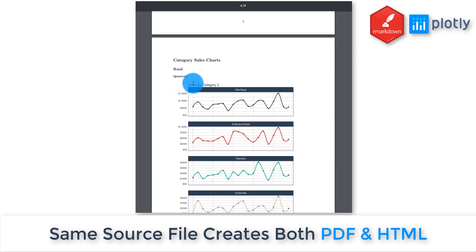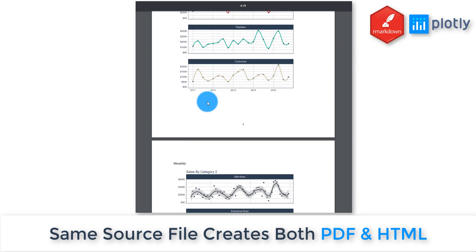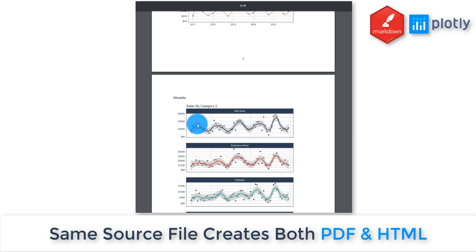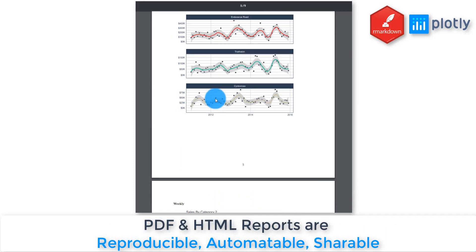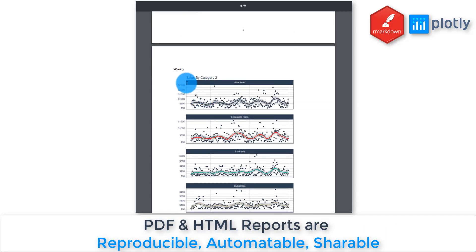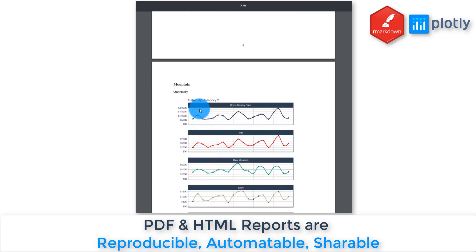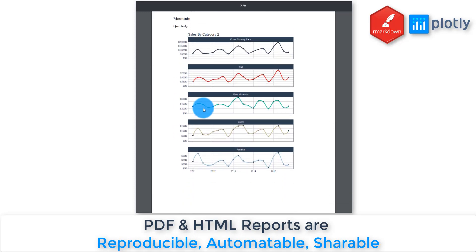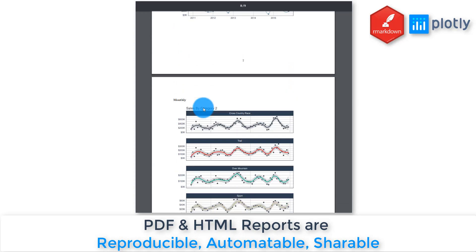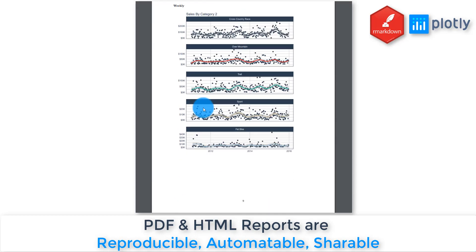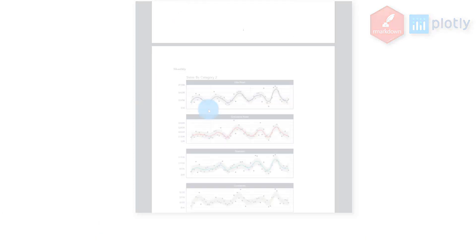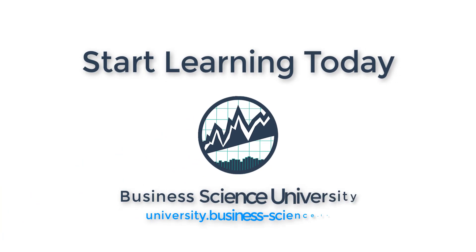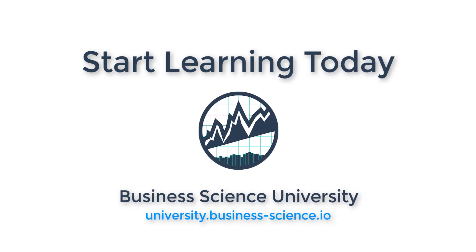We also have breakdowns by road — quarterly, monthly, and weekly road — and then we have the same for mountain: quarterly, monthly, and weekly, all in a nice PDF report that you can share with your boss. Start learning today with Business Science University.